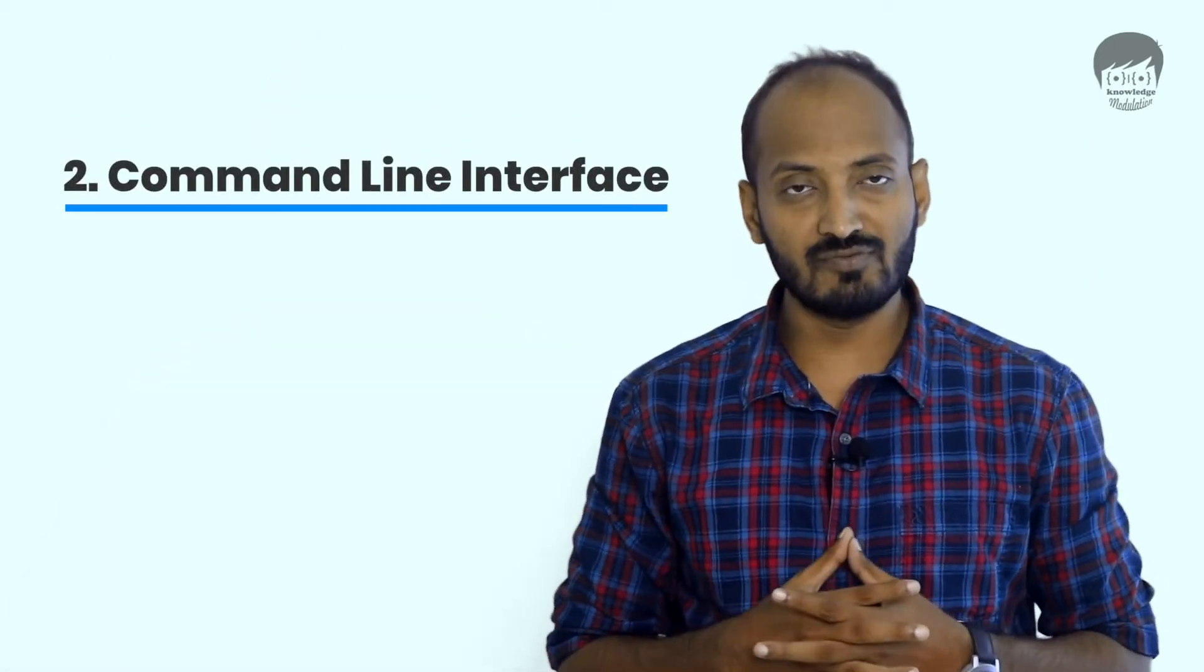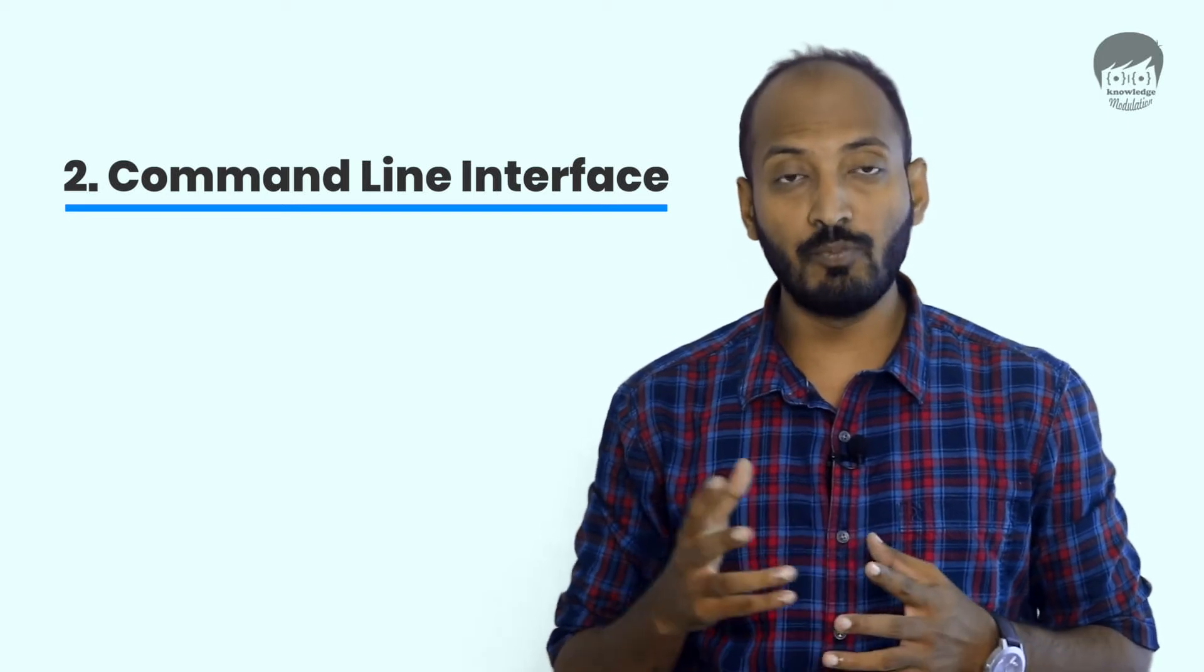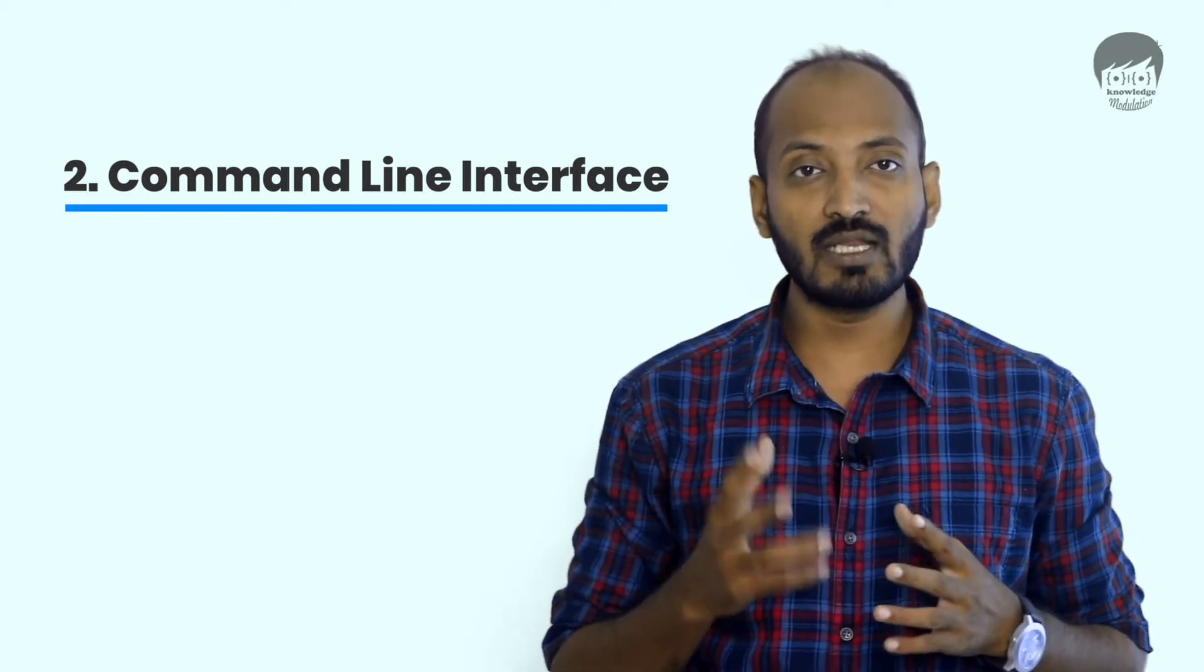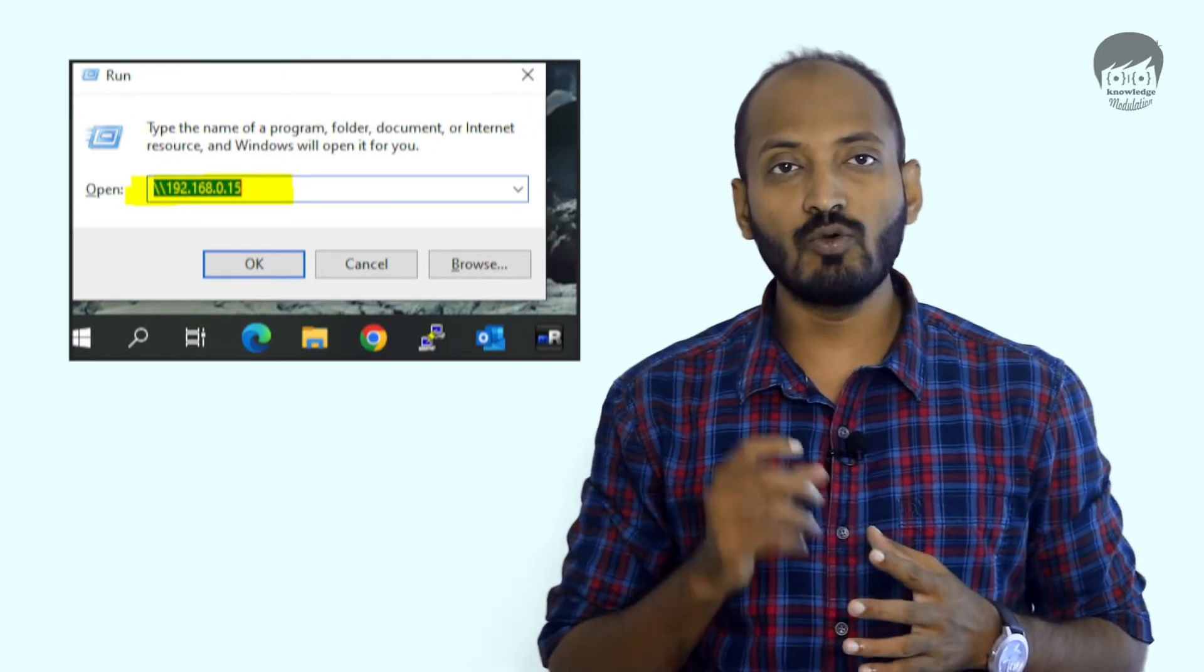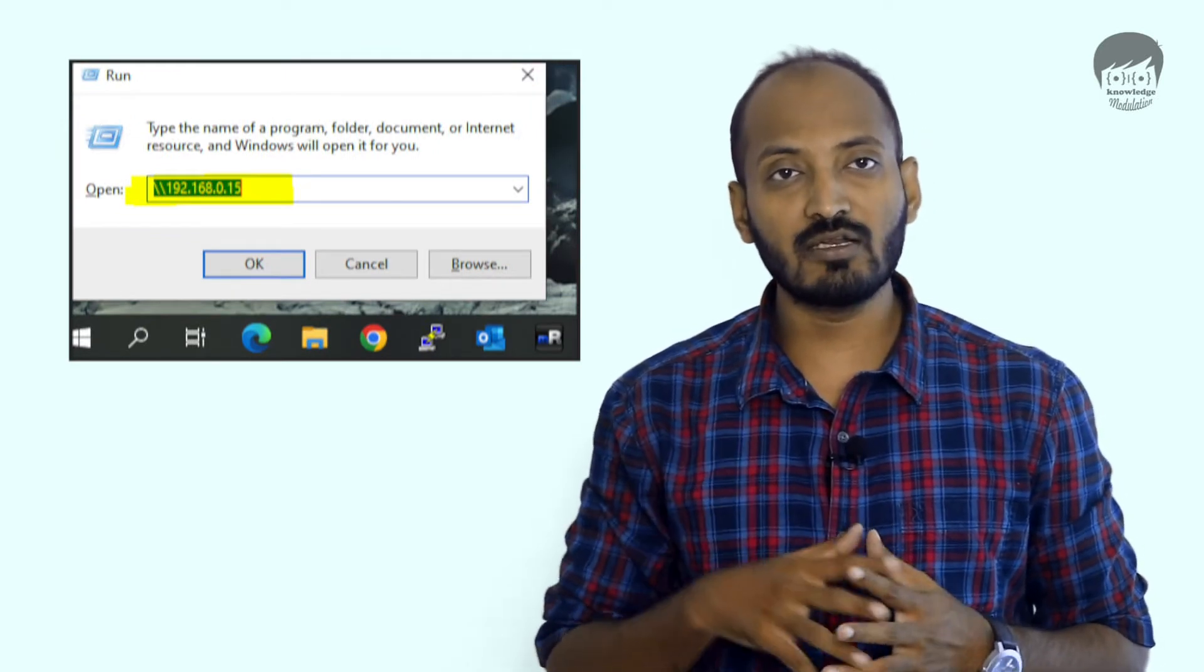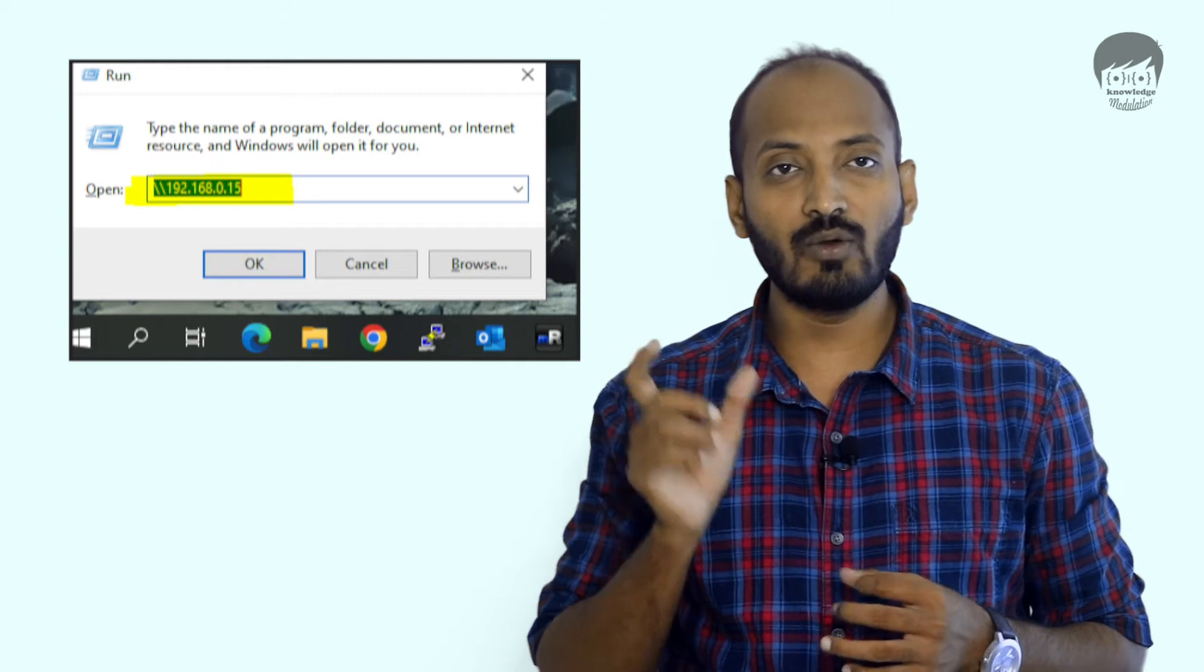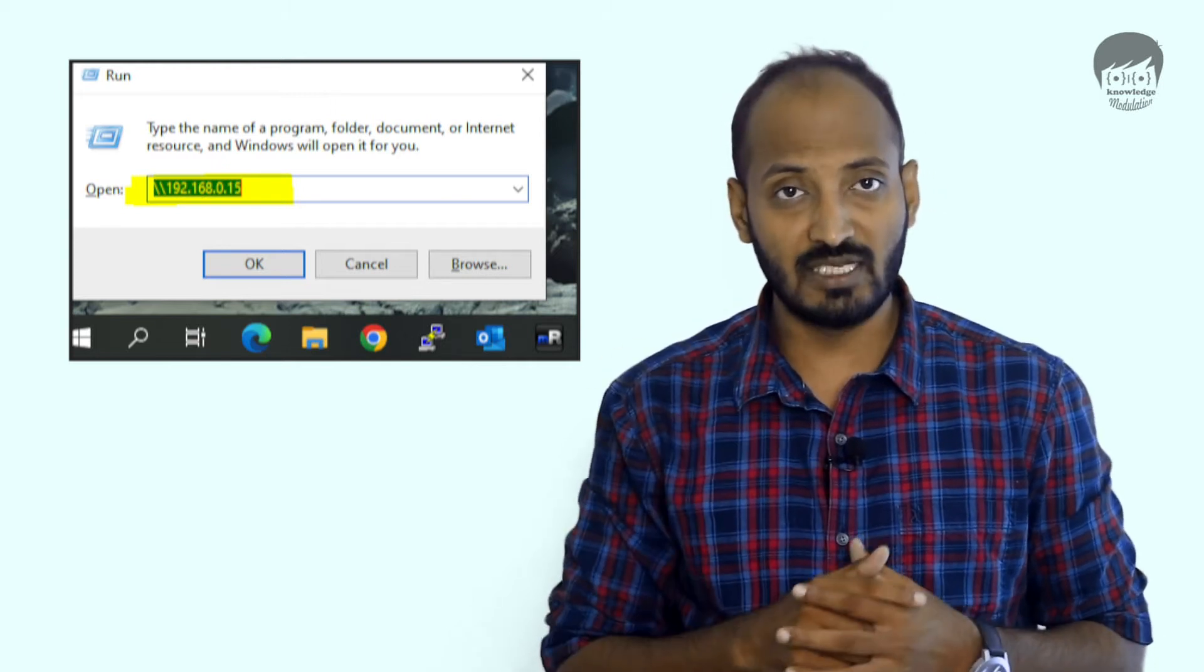The second option is using the command line interface. Well-known operating systems support built-in FTP clients, so you can access these locations easily through the terminal or command line. For example, in Windows, you can open the Run terminal and specify your network address, which starts with two backslashes and then the network address.